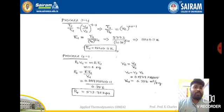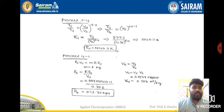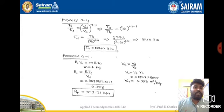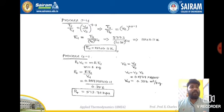For process 4 to 1, which is a constant volume heat rejection process, we use p4·v4 = mRT4 with m = 1 kg to find p4. For v4, we use the expansion ratio relation re = v4/v3 to calculate v4. By now we have found all the temperatures and pressures at all salient points of the cycle.